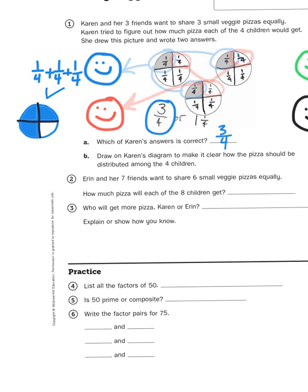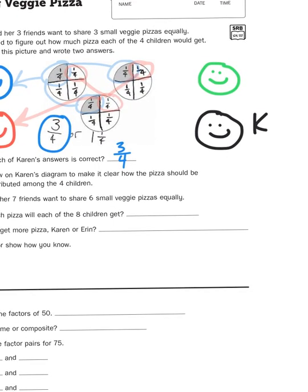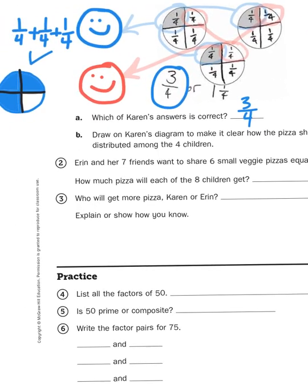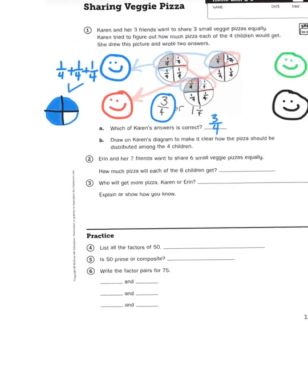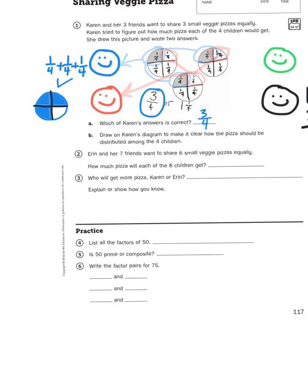So, now, we have some other iterations of the same problem. Number two says, Aaron and her seven friends want to share six small veggie pizzas equally. How much pizza will each of the eight children get? And then, you have to compare. Who will get more, Karen or Aaron? So, we know that Karen, over here, would get three-fourths, based on our model up here. So, now, we have to come up with a second model for Aaron and her seven friends to figure out who got what. So, I'll let you try to figure out problem number two, and then you need to compare the fractions. You would compare this answer here to this answer here for number three.